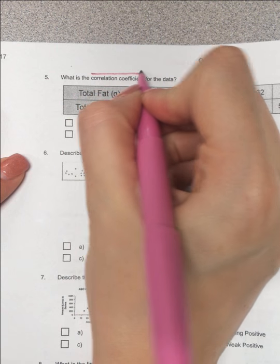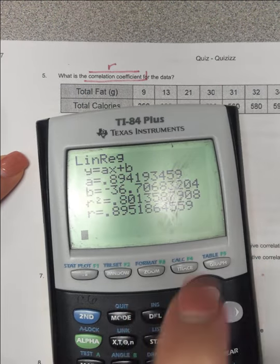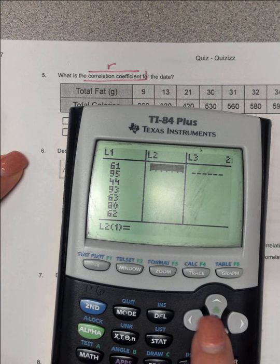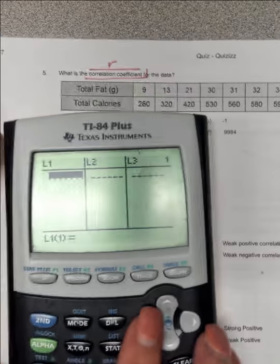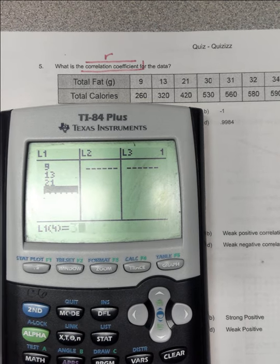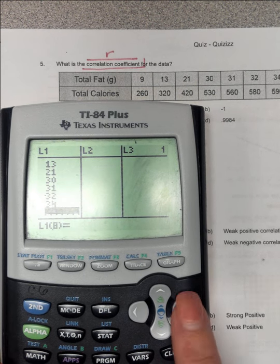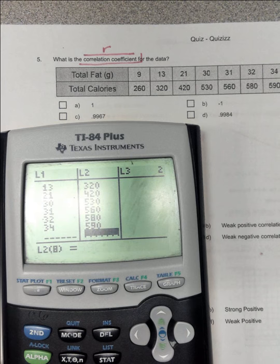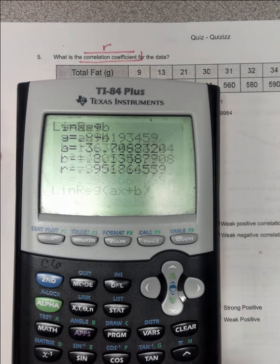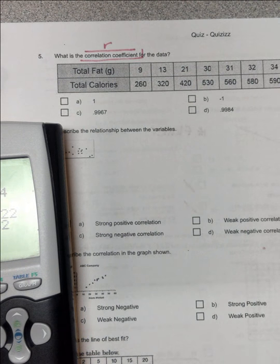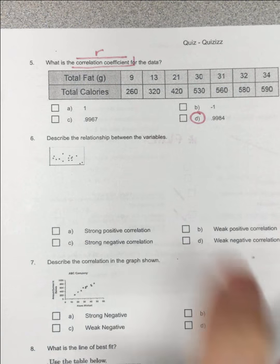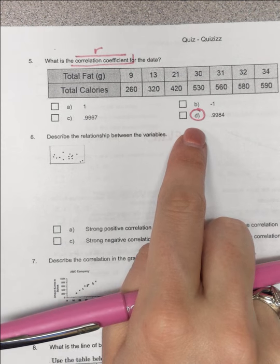We've got another correlation coefficient, so this is our R value. So stat, enter. If you want to clear your points, if you go up to the top, click clear, and go down, it'll clear it out. So we've got 9, 13, 21, 30, 31, 32, 34. Then we've got 260, 320, 420, 530, 560, 580, 590. Then we click stat, right, 4. And my R value is .99835, which is D. Guys, these are super close, so you've got to make sure that you're using your numbers exactly, so you know where you're supposed to go.